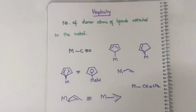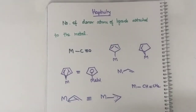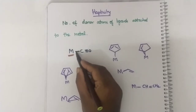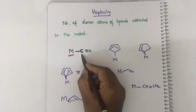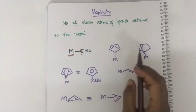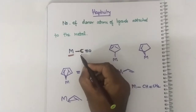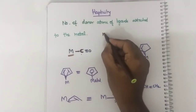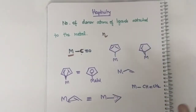Today we are going to see the topic hapticity. Hapticity is nothing but the number of donor atoms of ligands attached to the metal atom — the number of donor atoms attached to the metal surface. Hapticity is denoted by eta. Eta is nothing but hapticity.